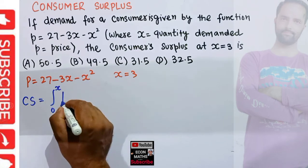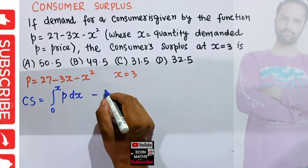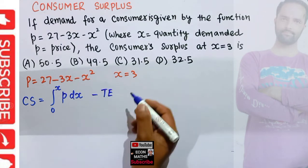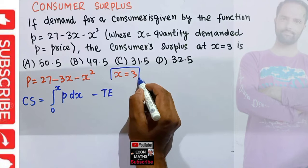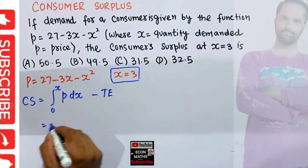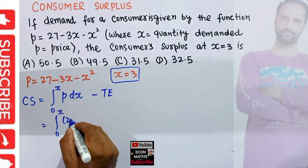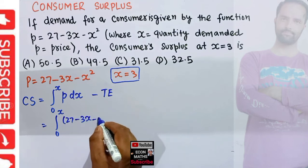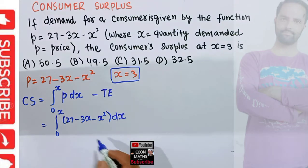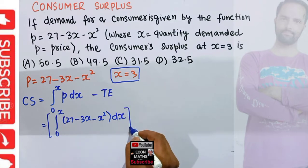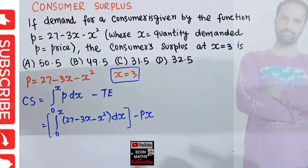We take the integral of the demand function with respect to X, and from this we subtract the total expenditure. Total expenditure is simply price multiplied by quantity. So we set up the integral from 0 to X of the demand function 27 minus 3X minus X squared, and subtract total expenditure, which is price into output.